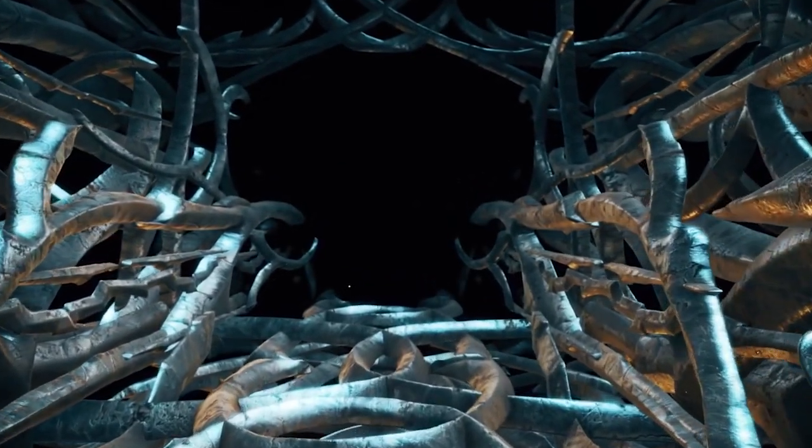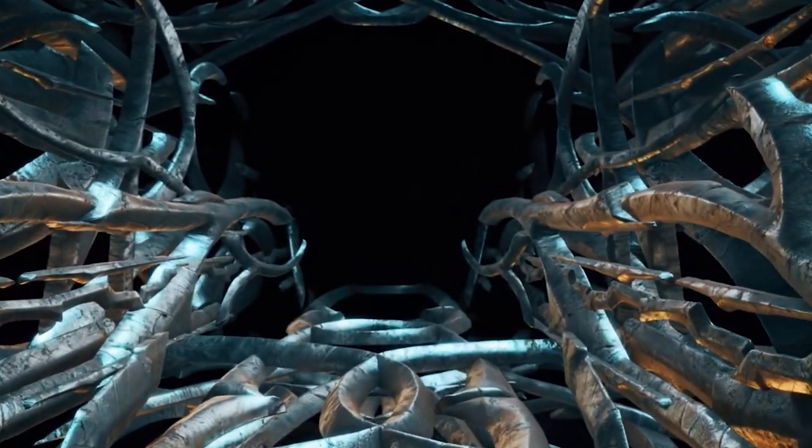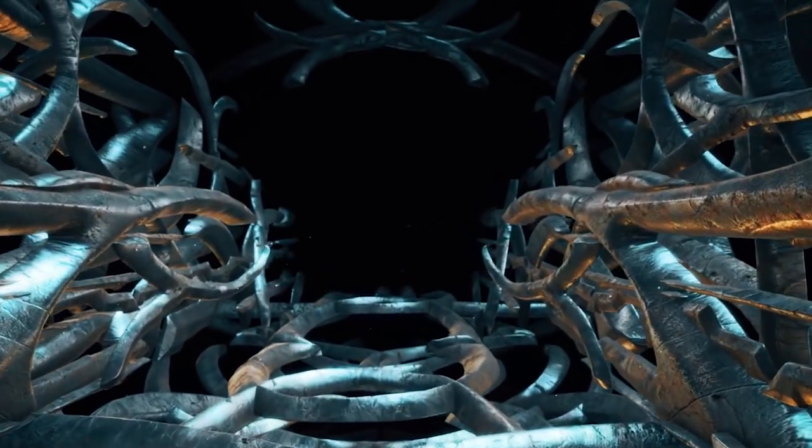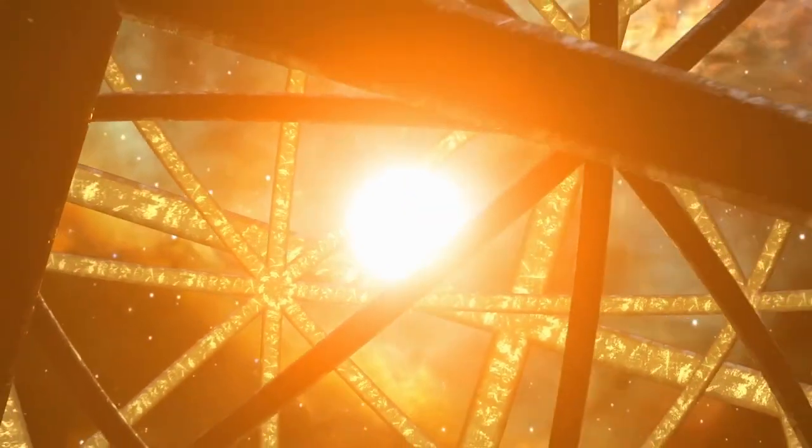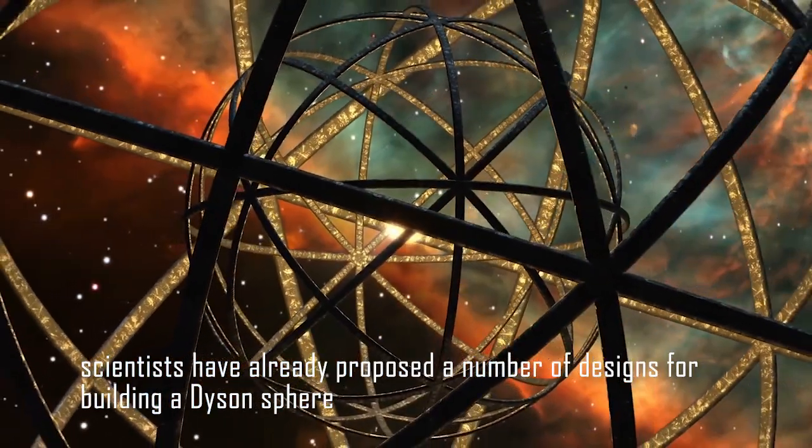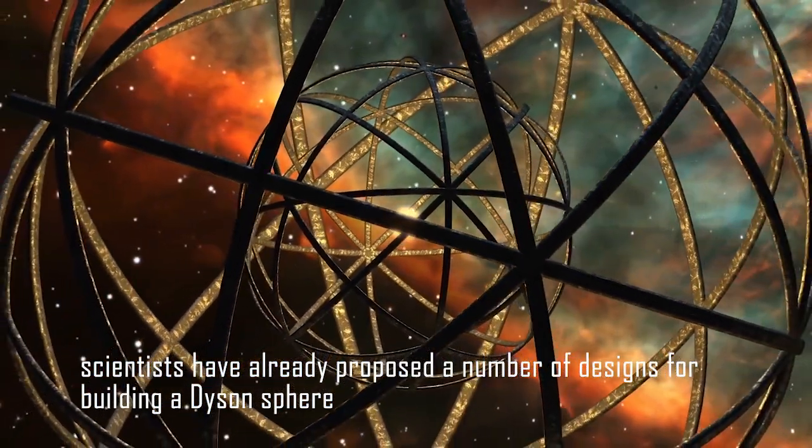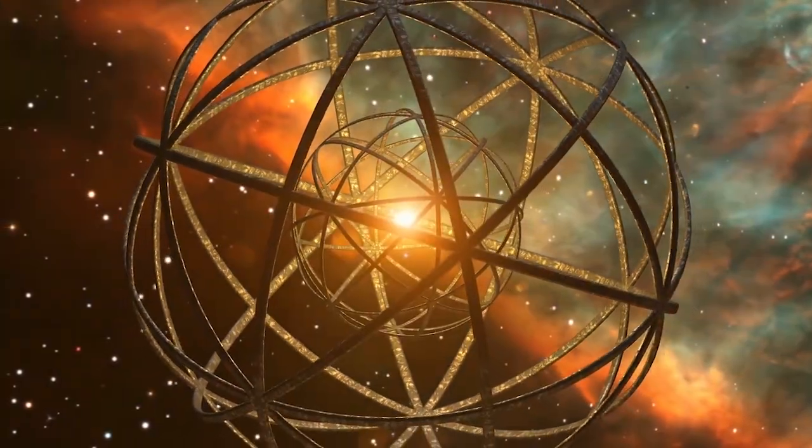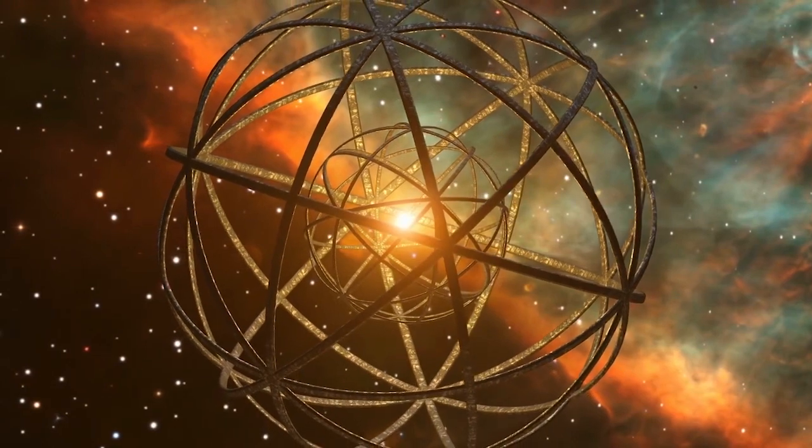A Dyson sphere is a theoretical megastructure that would completely surround a star, allowing a civilization to capture all of its energy output. While the idea of a Dyson sphere may sound like science fiction, it is actually based on solid physics and engineering principles. In fact, scientists have already proposed a number of designs for building a Dyson sphere, including a swarm of solar panels or a shell made of reflective material.